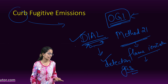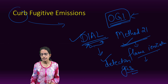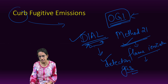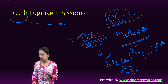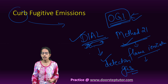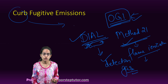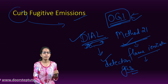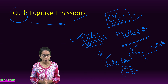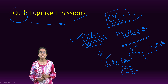So three important methods we need to understand under fugitive emissions: Method 21, which is the flame ionization detector; OGI, which is optical gas imaging; and DIAL, which is the differential absorption lidar — three important techniques to curb fugitive emissions.